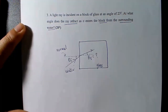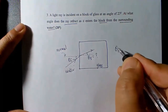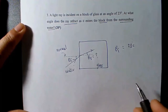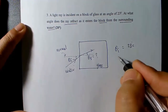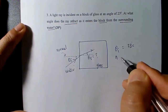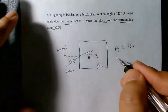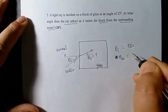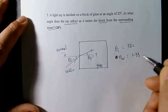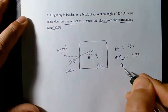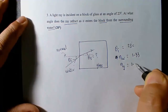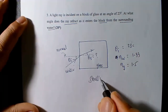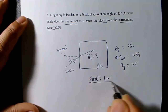So theta_I is incident at 23 degrees in the water medium. The index of refraction for water is 1.33, and the index of refraction for the standard glass is 1.5. Then Snell's law at the boundary simply says n1 sin(theta_1) = n2 sin(theta_2).